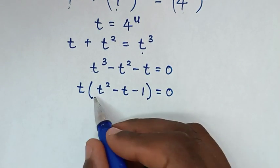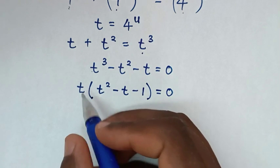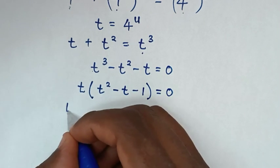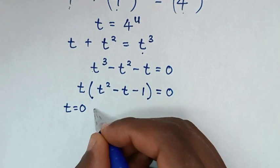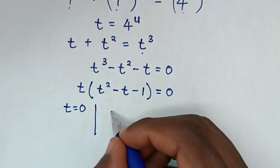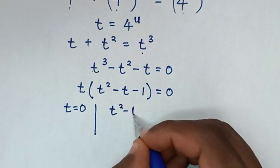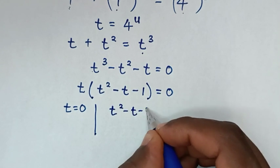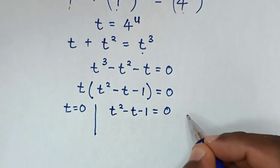From here we have two solutions. The first solution is t equals 0, and the second solution is t squared minus t minus 1 equals 0.